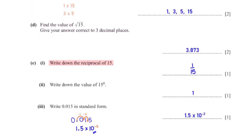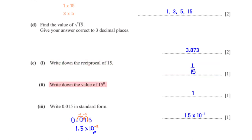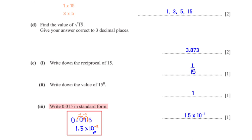Write down the reciprocal of 15. The reciprocal of any number is 1 over the number, so the reciprocal of 15 is 1 over 15. Write down the value of 15 raised to the power 0. Any number raised to the power 0 is 1, so 15 raised to the power 0 is 1. Write 0.015 in standard form. We move the decimal point to after the first non-zero digit, giving 1.5, then multiply by 10 to the power negative 2.